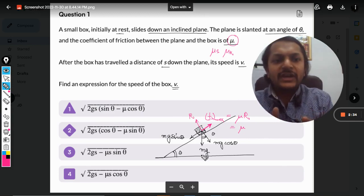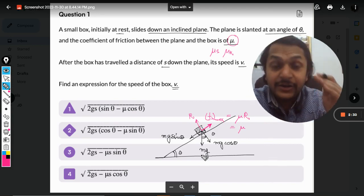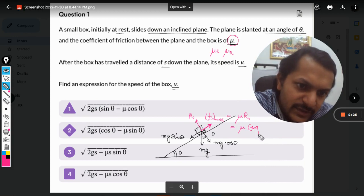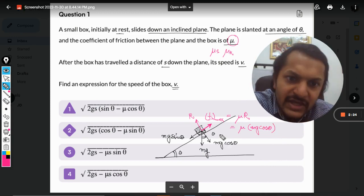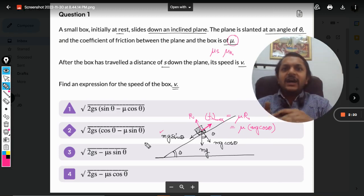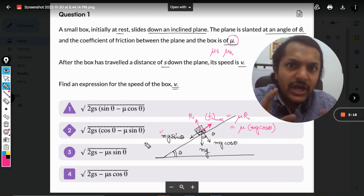Because the body is neither moving in the direction of mg cos theta nor in the direction of R, we can say both forces are equal. So R will become mg cos theta. The forward force is mg sin theta and the backward force is mu mg cos theta.